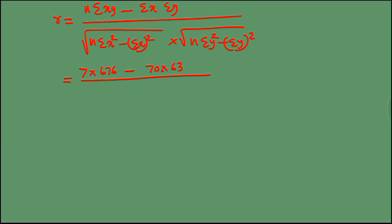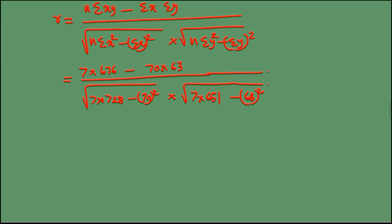Looking at the simplification: the numerator is 4732 minus 4410. The denominator is the square root of (5096 minus 4900) into the square root of (4557 minus 3969).